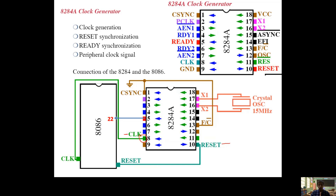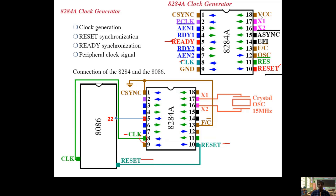The code segment register is fetched with the value of FFFFH and the next instruction is fetched from address FFFF0H. Pin number 22 is ready — in 8086 it is the ready pin. So the three very important pins are: ready, clock, and reset. These three pins of the 8284 are connected to the processor. The remaining pins — X1, X2 — are connected to the external crystal oscillator, power supply pin, and clock synchronizing pin.